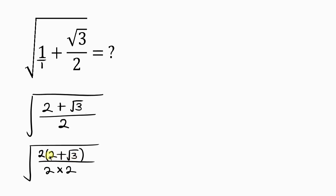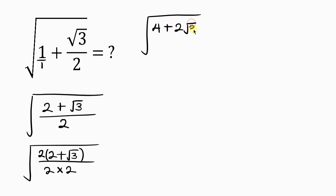So we have the square root of — now opening up the bracket — we have 2 times 2 is 4, plus 2 times root 3 is 2 root 3. All over 2 times 2 times 2 is 4. Now notice that the denominator is now a perfect square.